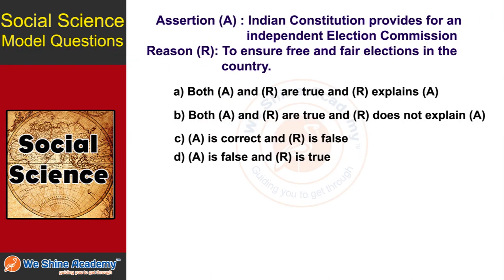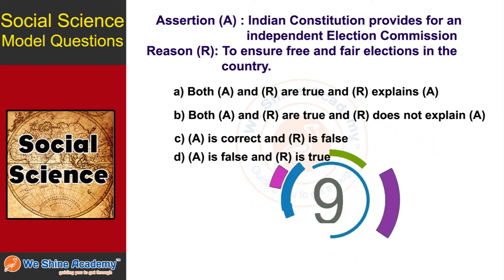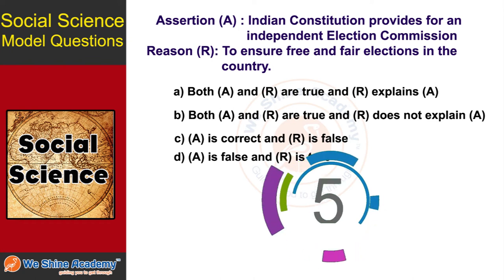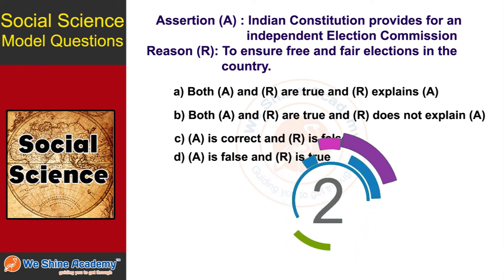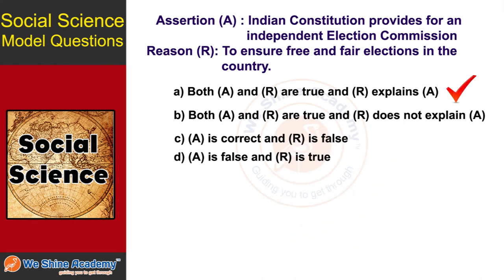The next question is an Assertion and Reason question. Assertion: The Indian Constitution provides for an independent Election Commission. Reason: To ensure free and fair elections in the country. The answer is Option E: both A and R are true, and R explains A.